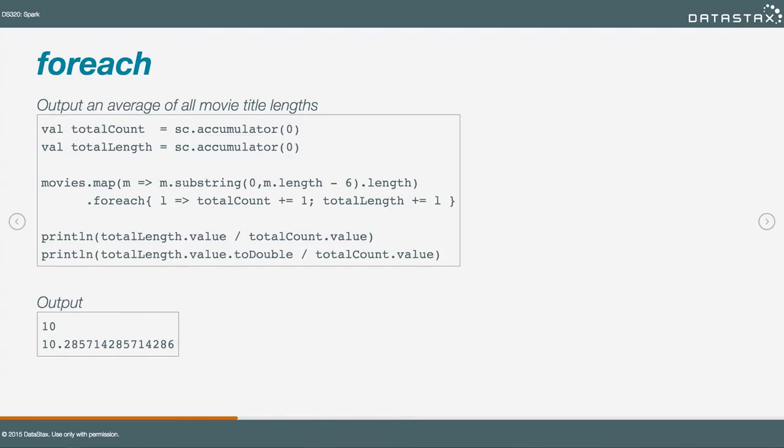To cover foreach, we're going to use a feature called accumulators, which get their own treatment in a separate section. An accumulator is a distributed counter — it's not data we need to manage or think about where it exists. We create it, give it a name and initial value, and increment it when we want. In the code, we create two accumulators: total count and total length. We map the movies RDD to extract just the title string, then iterate with foreach over each element, incrementing total count and accumulating the total string length. When done, it's straightforward to calculate an average.